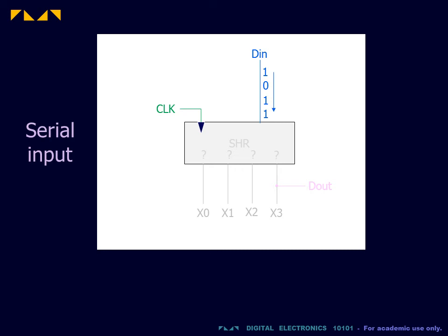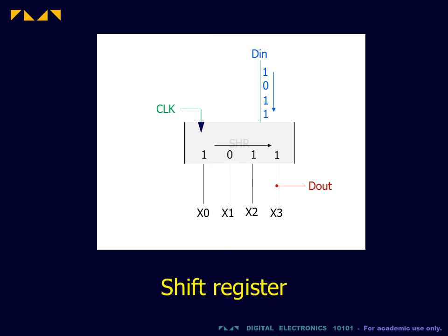For serial input, each incoming bit is latched synchronously as the leftmost bit of the register. With each successive latch, the stored data is shifted from left to right. A register that is capable of this shift function is called a shift register.